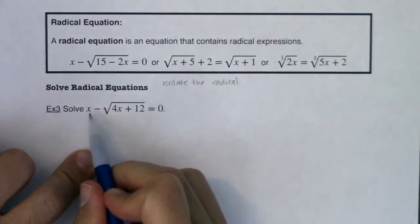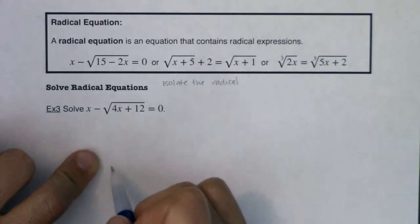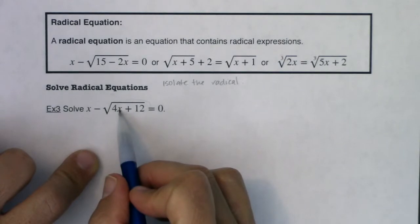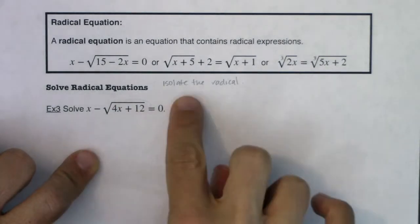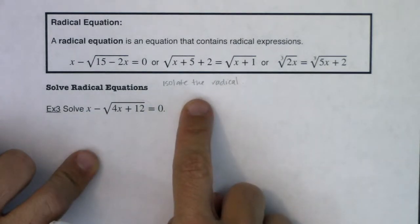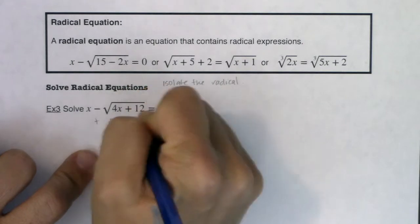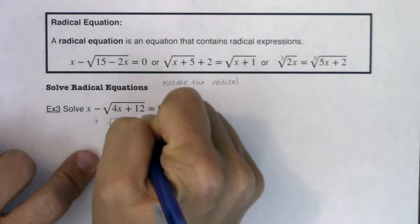Right now my radical is on the left side of the equation, but it's not alone. It's got this x with it. And if I want to get it all by itself on a side of the equation, I think the simplest way is actually to move it to the right. I could subtract the x from both sides, but I like positive coefficients, so I'm going to add the square root of 4x plus 12 to both sides.